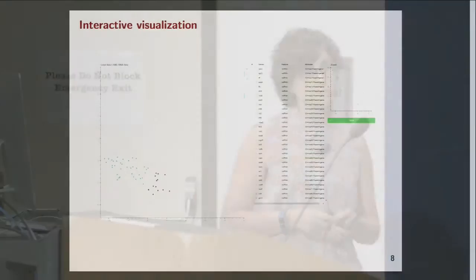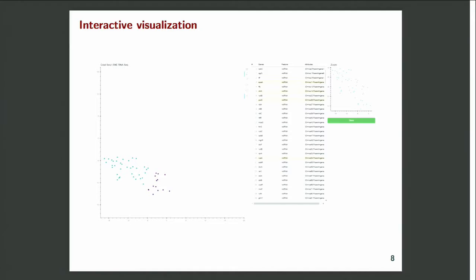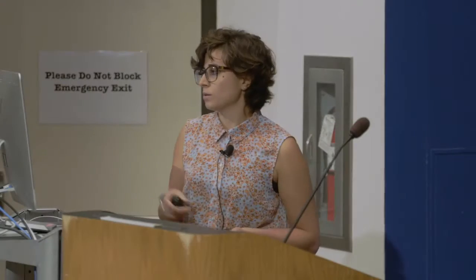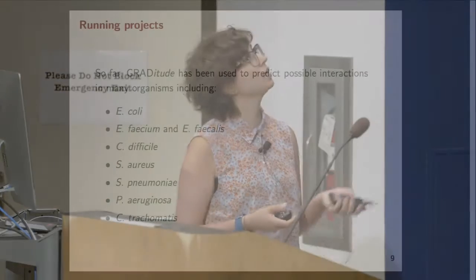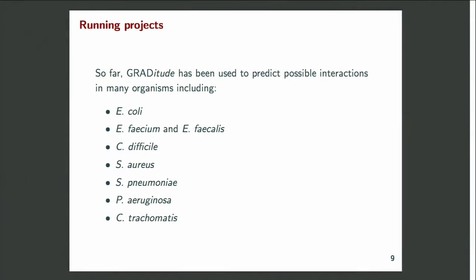This last example is an interactive plot — also a TSNE plot — and I would like to point out that this is totally interactive and totally explorable. So far, Gratitude has been used to predict possible interactions in many organisms, including E. coli, Enterococcus faecalis, Enterococcus faecium, and several more.